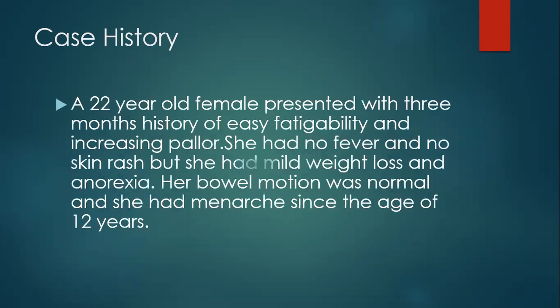We start with the case history. A 22-year-old female presented with a three-month history of easy fatigability and increasing pallor. She had no fever and no skin rash, but she had mild weight loss and anorexia. Her bowel motion was normal and she had menarche since the age of 12 years. The information from the patient's history is relatively simple, with no important past medical history for this young female.